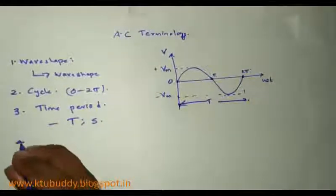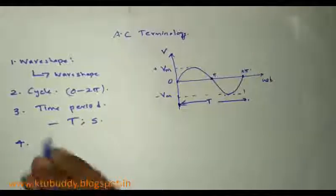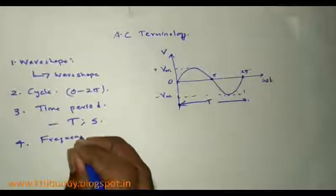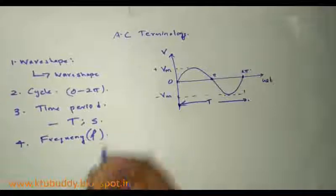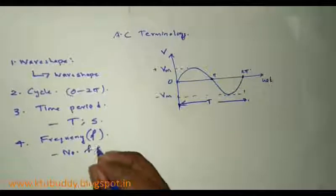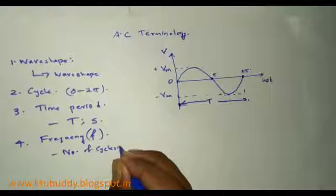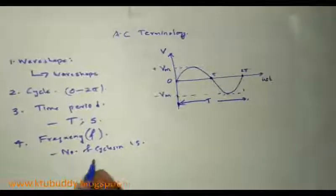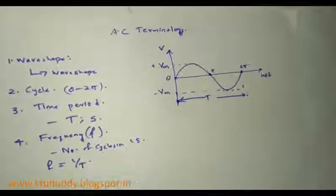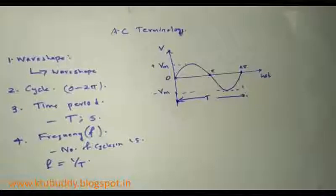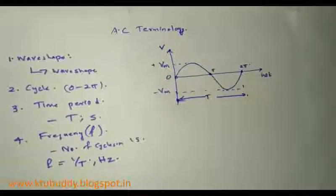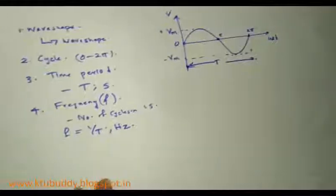The next term is frequency. Frequency is the number of cycles in one second. Frequency f is given as the reciprocal of time period — that is, the number of cycles per second — and its unit is hertz. This is the fourth term.